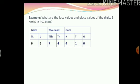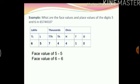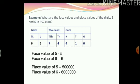You can see that 6 is in the 10 lakhs place and 5 is in the lakhs place. The face value of 5 is 5 and the face value of 6 is 6, but the place values can be different. The place value of 5 is 5 lakh and the place value of 6 is 60 lakh. This is how face value and place value are different.